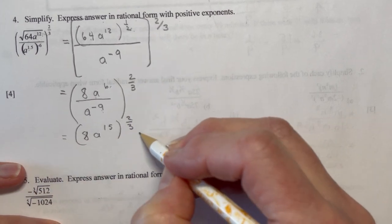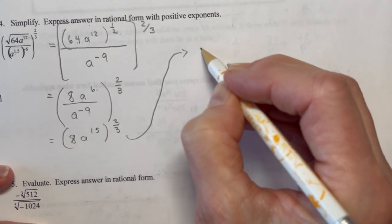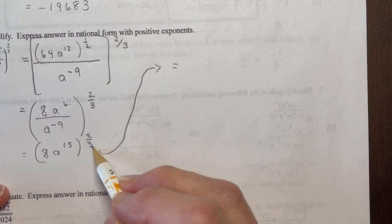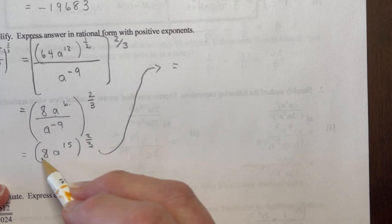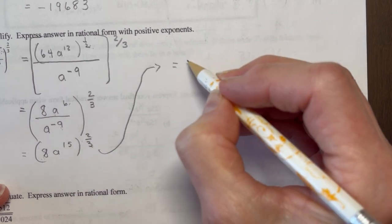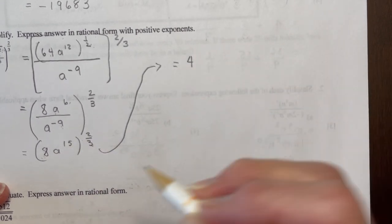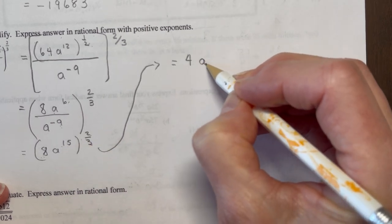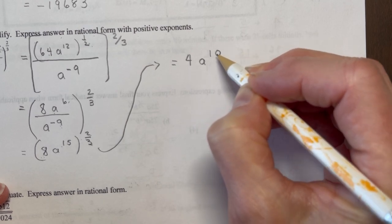And I'll just do the last little bit here. Bring it over here. So the cube root of 8. So you look to the denominator first, right? The cube root of 8 is 2, 2 squared is 4. There's my constant. And 15 divided by 3 would be 5 times 2 is 10. So I have 4a to the 10th.